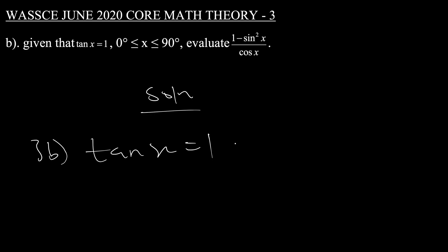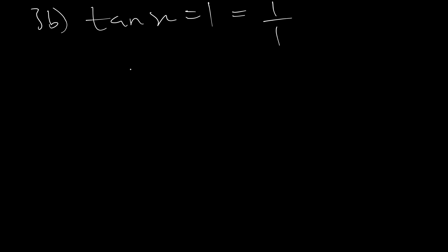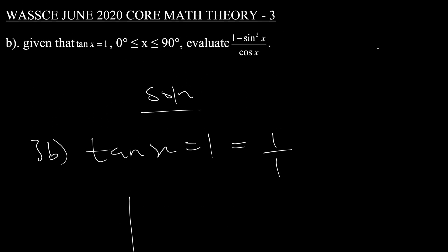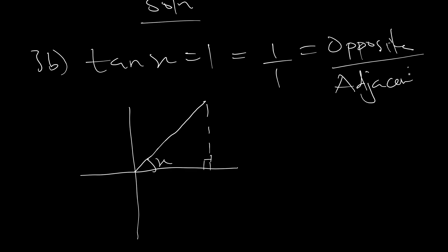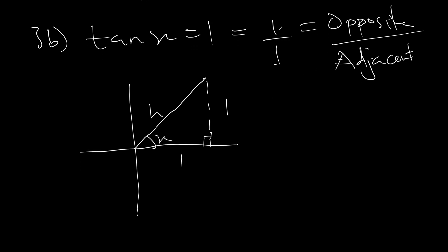For question 3b, tan x equals 1, which is the same as 1 over 1. Since x is between 0 and 90 degrees, x is an acute angle. Drawing a right angle triangle, we know that tan equals opposite over adjacent. So our opposite is 1 and our adjacent is 1. This gives us the triangle with opposite 1, adjacent 1, and hypotenuse h which we need to find.